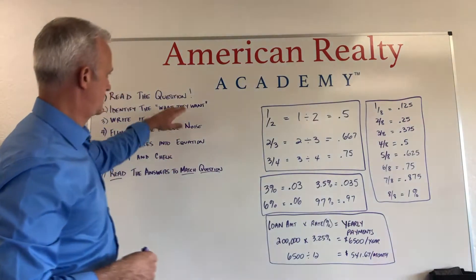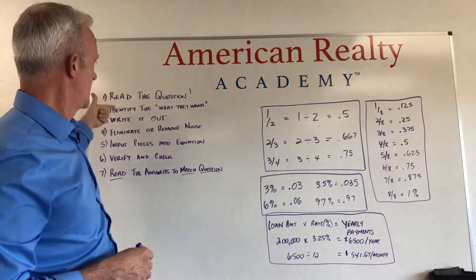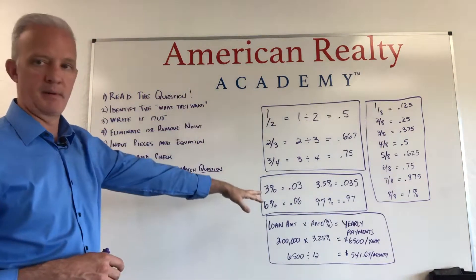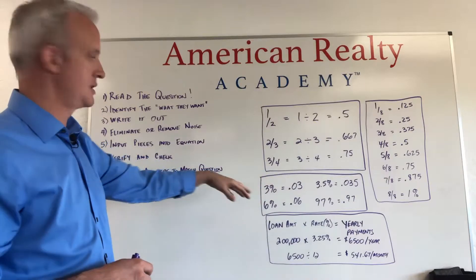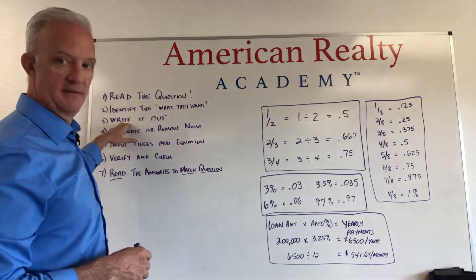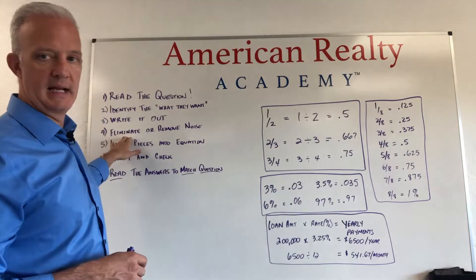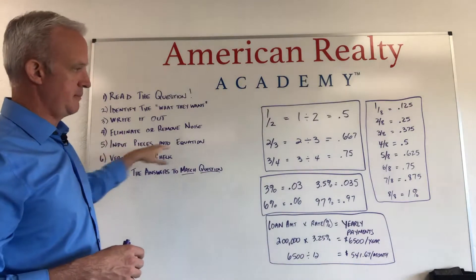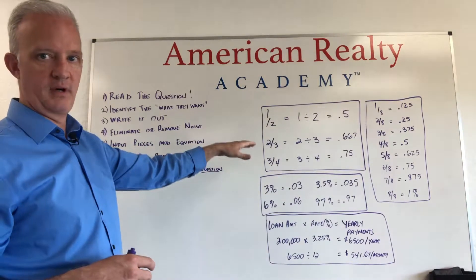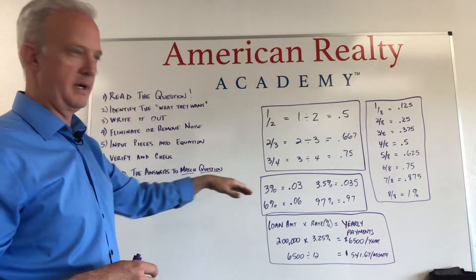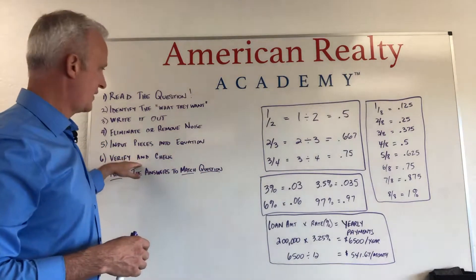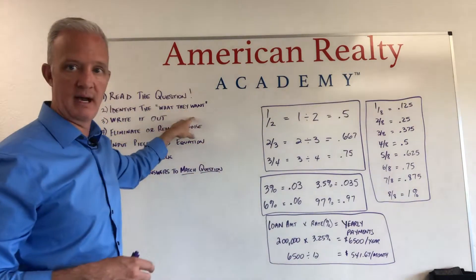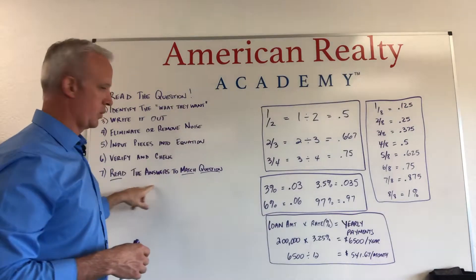It's very simple to recapture: read the entire question, identify what it is they want. In this case, we're going to start talking about percentages, whole numbers, small numbers. We're then going to write out what they give to us. We're going to try and eliminate any white noise or unnecessary information. We're going to input the pieces into the puzzle to figure out what they gave us versus what we need. We're going to verify what they gave us, what we have, and does it match what they're asking for. And then lastly, we're going to look at the answers.